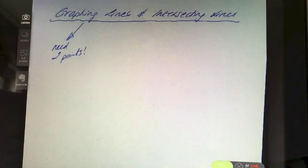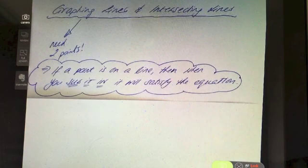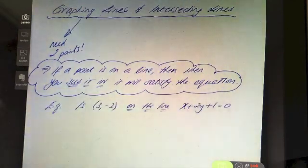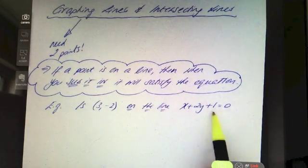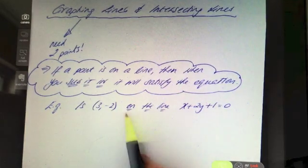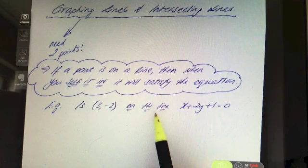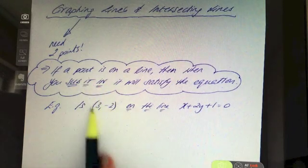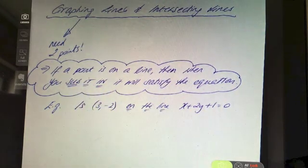The first thing to consider is how you know when a point is on a line. If a point is on a line, then when you substitute it in it will satisfy the equation. Whenever you see the words 'on the line' in a question, always remember to sub in whatever they've given you.